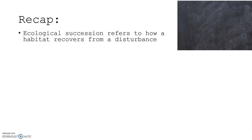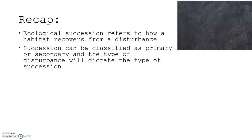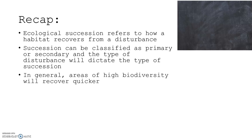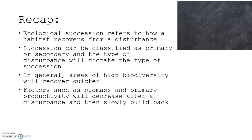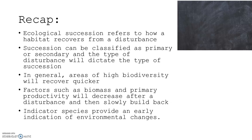To recap: ecological succession refers to how a habitat recovers from a disturbance. Succession can be classified as primary or secondary, and the type of disturbance dictates which occurs. Primary succession always occurs where there is no soil and starts with lichens; secondary succession has soil already present. Areas of high biodiversity recover quicker. Factors such as biomass and net primary productivity decrease after a disturbance and then slowly build back. Indicator species can provide early indication of environmental changes.